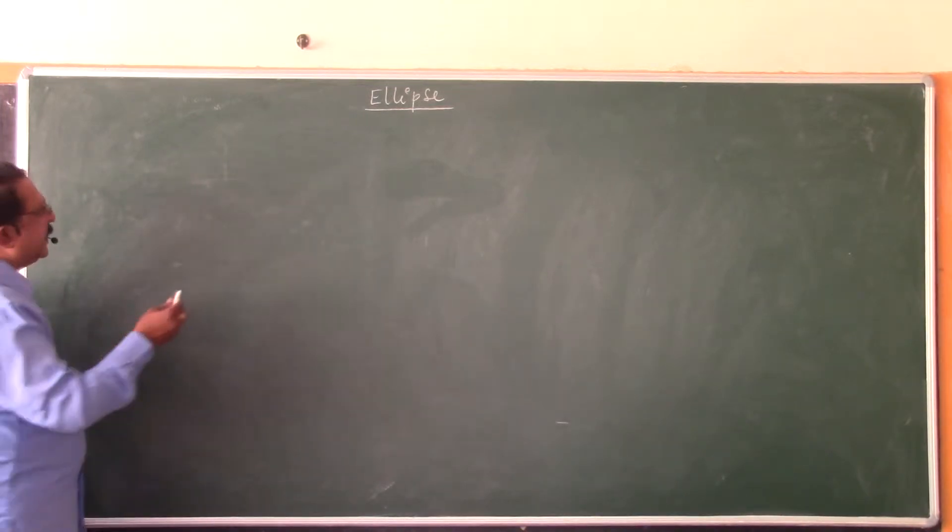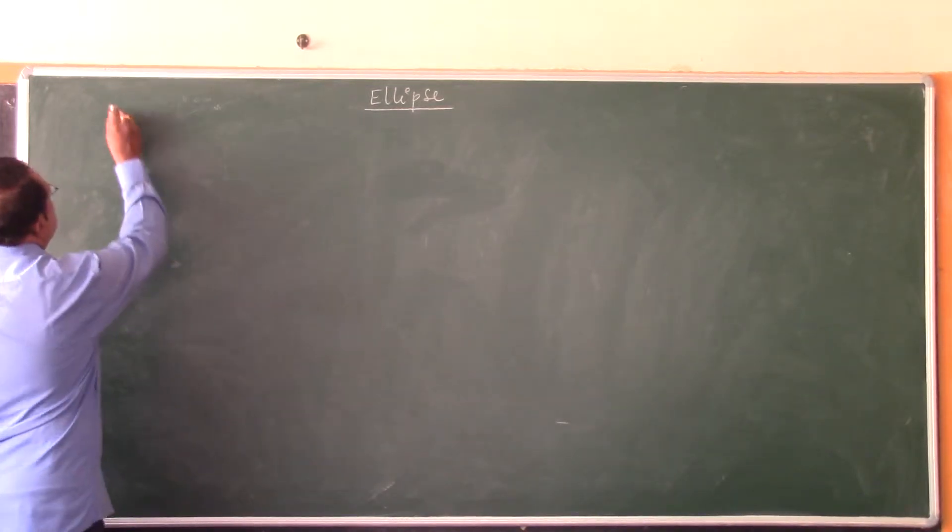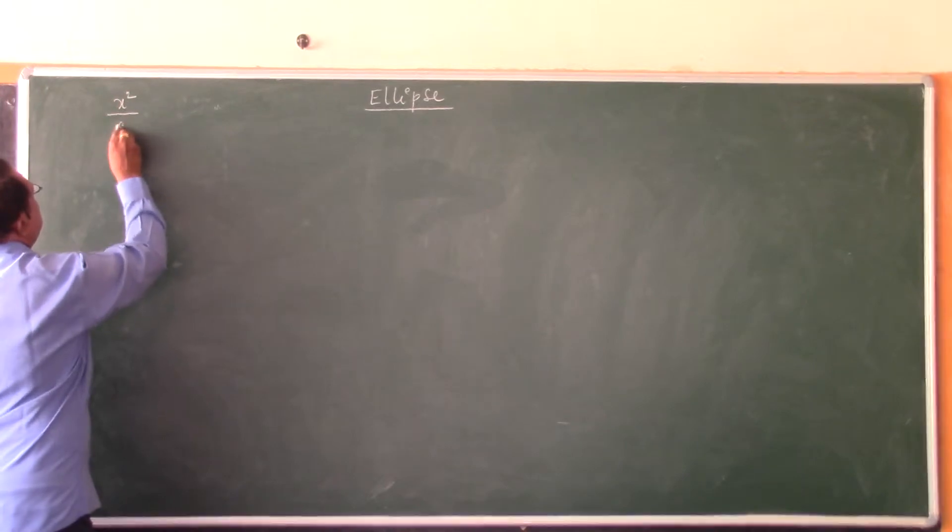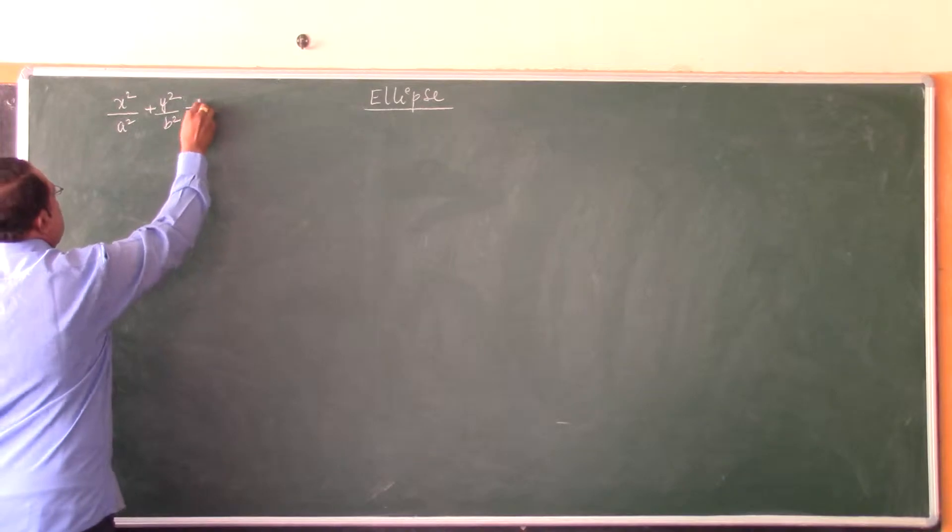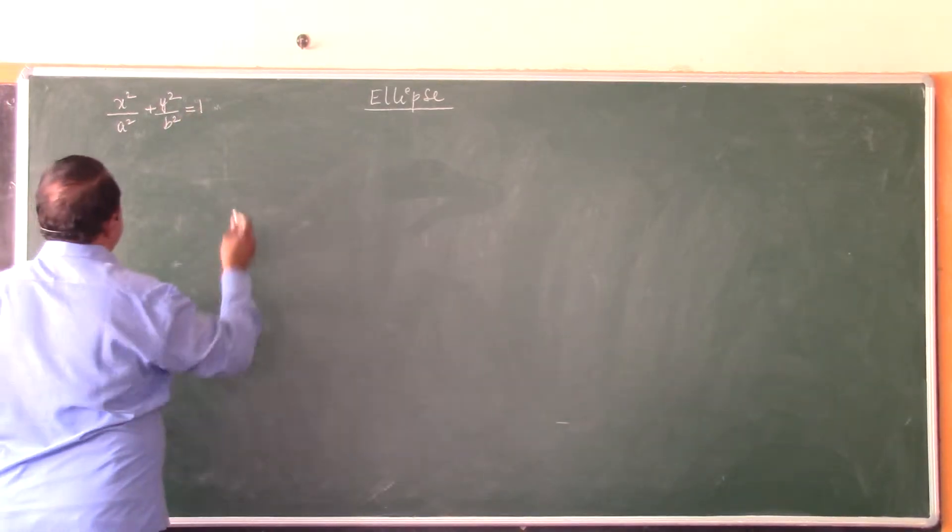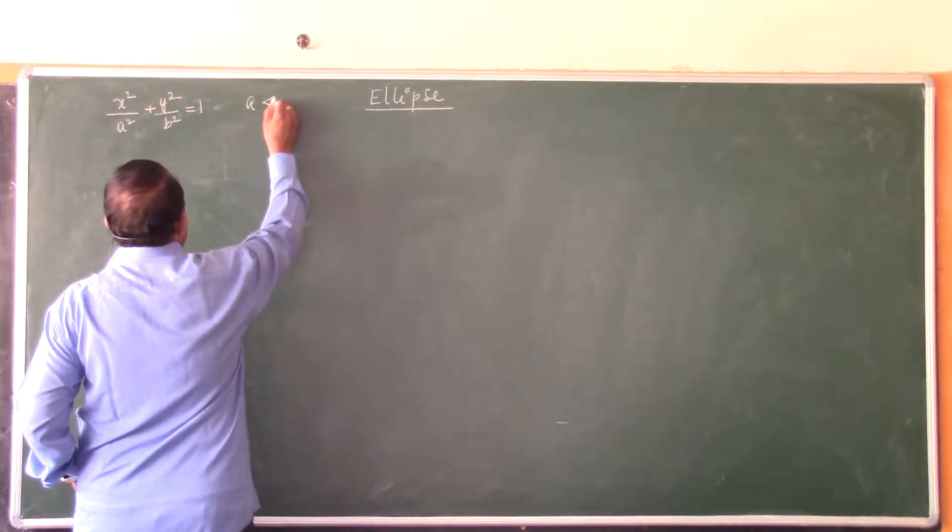Now let's learn the details of the ellipse x² by a² plus y² by b² equals 1, when a is less than b.